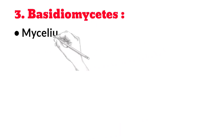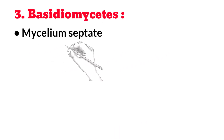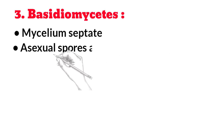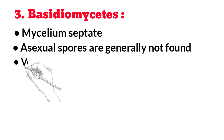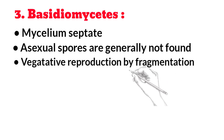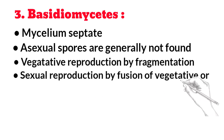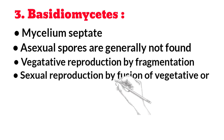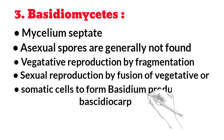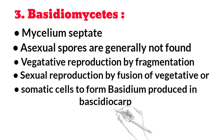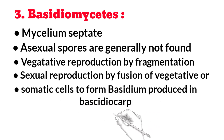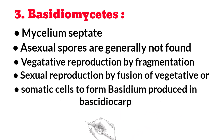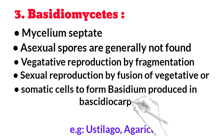Basidiomycetes — mycelium is septate. Asexual spores are generally not formed. Vegetative reproduction occurs by fragmentation. Sexual reproduction occurs by fusion of vegetative or somatic cells to form basidium, produced inside a basidiocarp. Example: Ustilago.